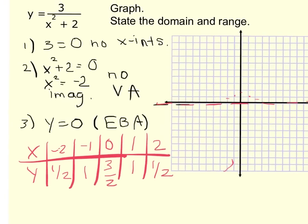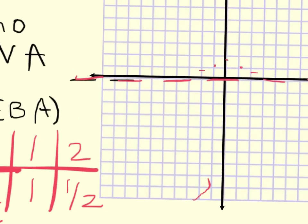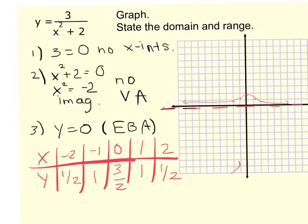If you put in really large values for x, that creates a large denominator, and dividing by a large number produces a very small result. So no matter how large x gets in the positive or negative direction, the output gets closer and closer to 0 — my asymptote. With those points plotted, the graph rides along the asymptote. No vertical asymptotes means one nice continuous piece of graph.